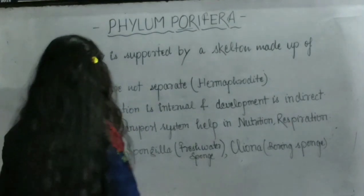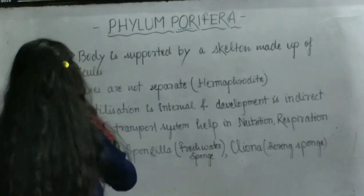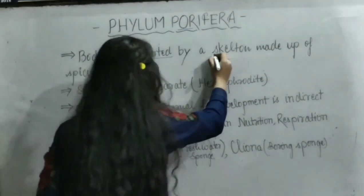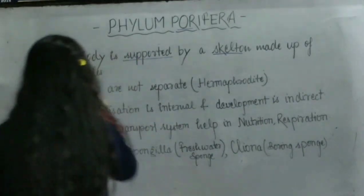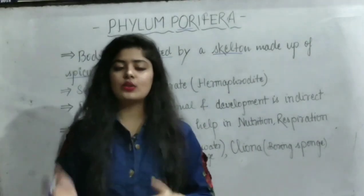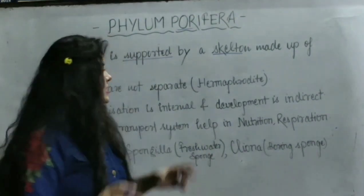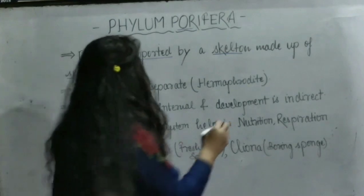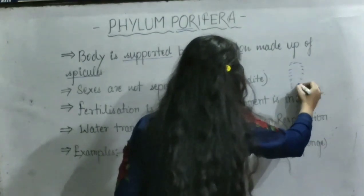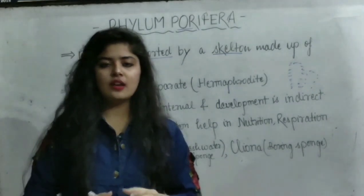Next point: the body is supported by a skeleton made up of spicules. Their body is supported by a skeleton made of spicules. Actual bones are not present, but the framework of their body is made up of spicules present in minute shapes throughout the body.